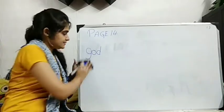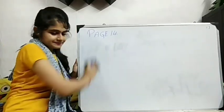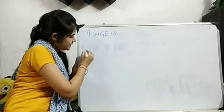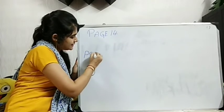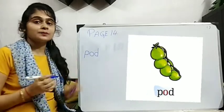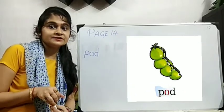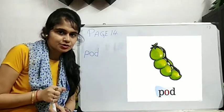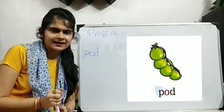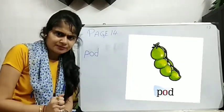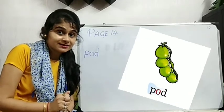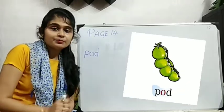Second one. Next word is P-O-D. Pod. P-O-D. Pod. G-O, you have seen. Green peas. Motor shooti. Should we eat? Motor shooti. Very good.